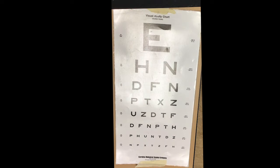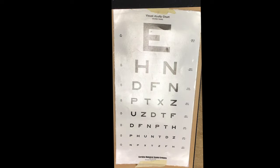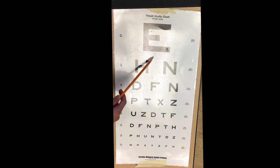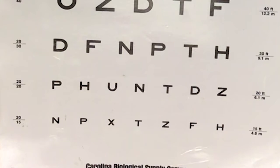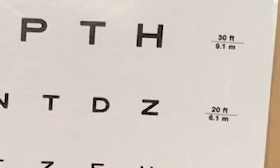Visual acuity is the ability to distinguish details. We can measure this using a Snellen eye chart. The size of the letters on the chart are such that you should be able to read the first line from 200 feet away, just over 60 meters, and line 8 of the chart from 20 feet away, about 6 meters.